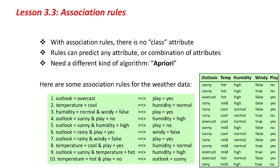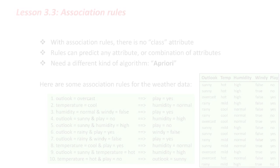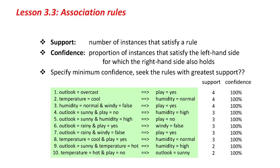There are lots of 100% correct rules for the weather data — I think there are 336 rules that are 100% correct. Somehow we need to discriminate between these rules. The way we do this is to look at the support, the number of instances that satisfy a rule, and the confidence, the proportion of instances for which the conclusion holds. They all have 100% confidence but different degrees of support. Typically we specify a minimum degree of confidence and seek the rules with the greatest support with that minimum confidence.